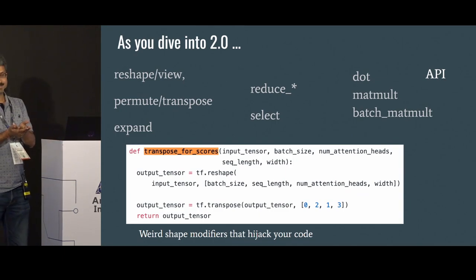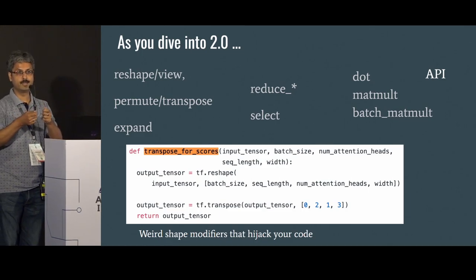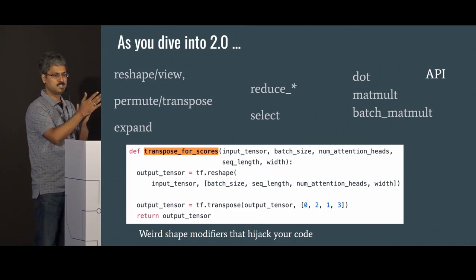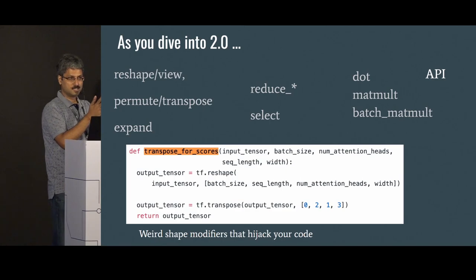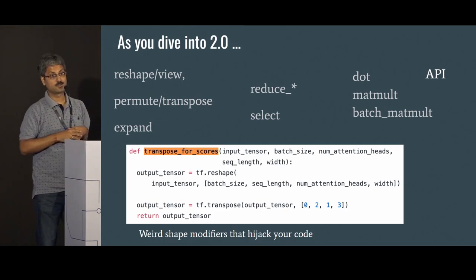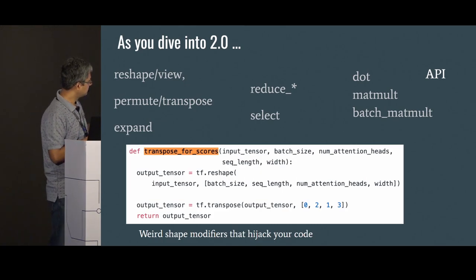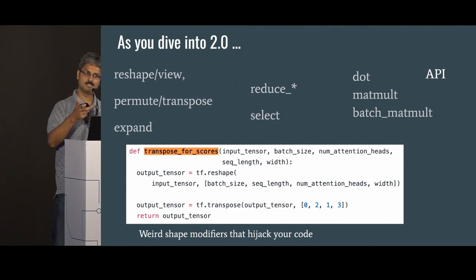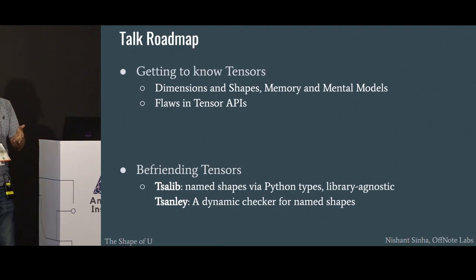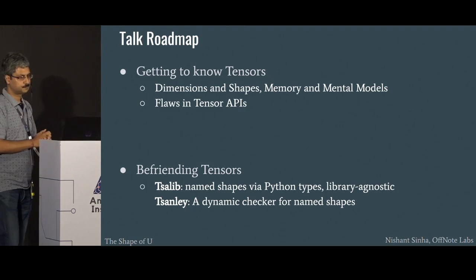Like sets and lists, you need to know the API — the programming interface — for tensors. What happens when you insert? What happens when you combine? Tensors have their own API, and actually a laundry list of APIs: reshape, permute, expand, reduce, select, matmul, different kinds of matmul. It's a whole new world. Anybody working with tensors has to get familiar with this API. You see weird code doing a reshape of a tensor with a tuple, a transpose with some indices — these weird shape modifiers that hijack your code. Getting familiar with tensors is really important to write machine learning and deep learning programs.